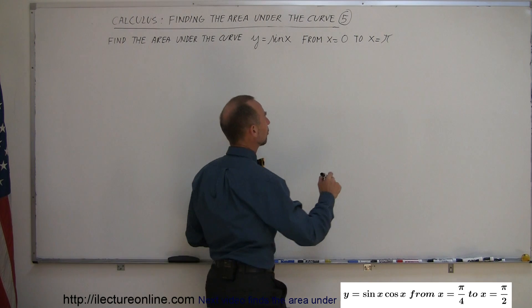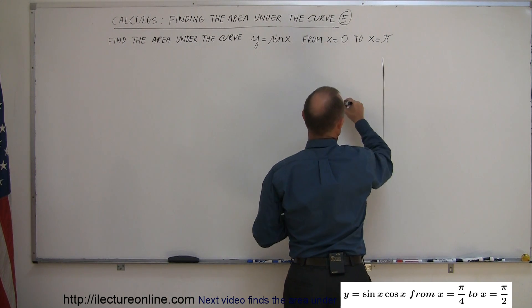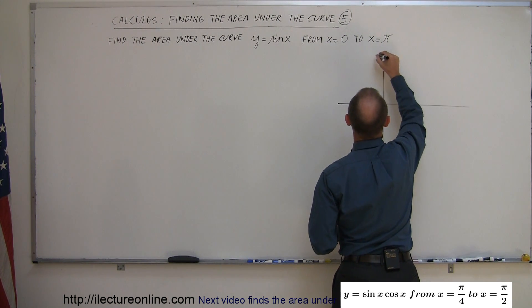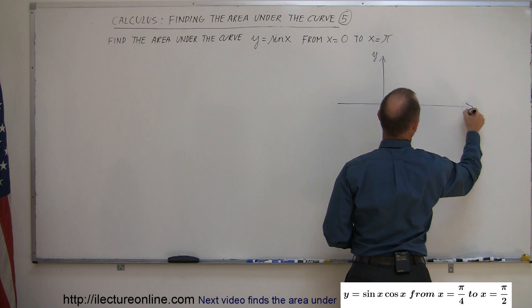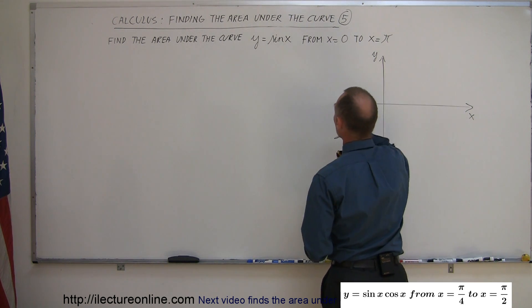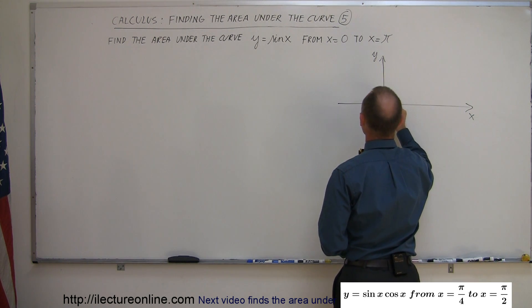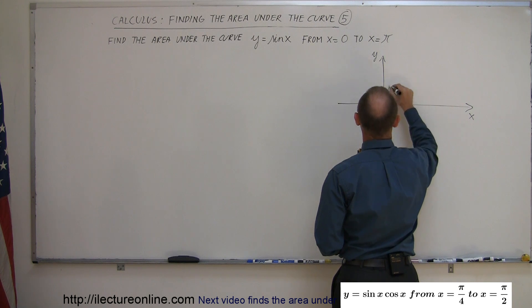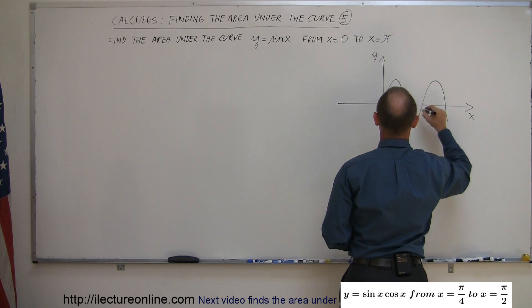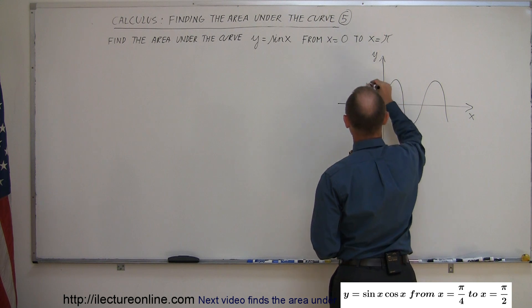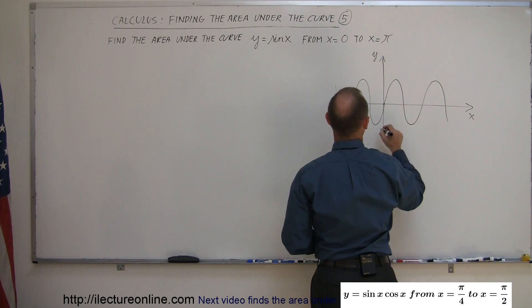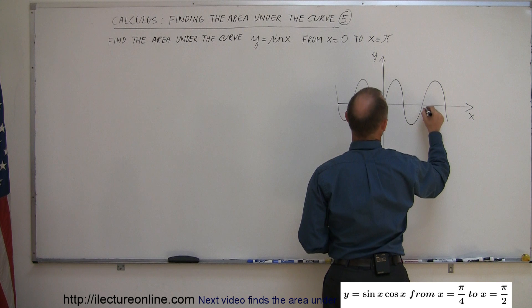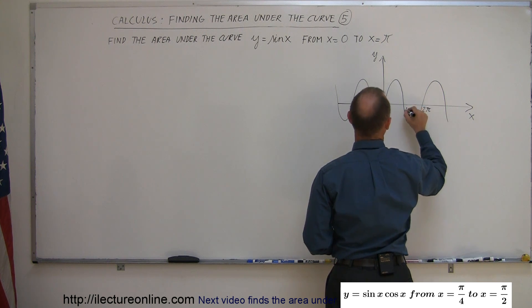So let's graph the function first. Here's our y-axis, here's our x-axis. It's the sine function, which means when x equals 0, it is 0. So the function looks like this. And then over here, it goes like this. This is x equals 0, this is x equals 2 pi, this is x equals pi.